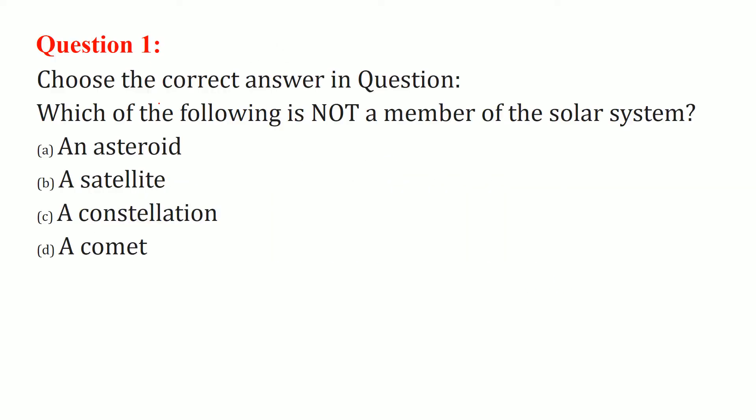First, we have to choose the correct answer. Which of the following is not a member of the solar system? Constellation is not a member of the solar system. Asteroid, satellite, and comet are.